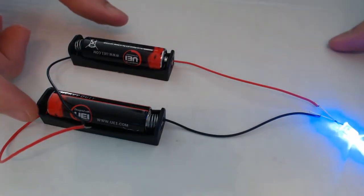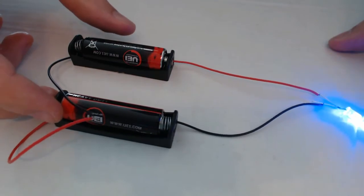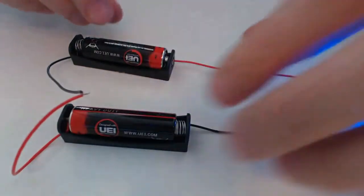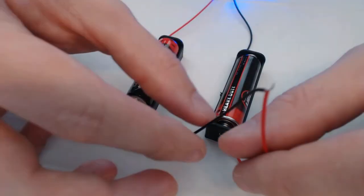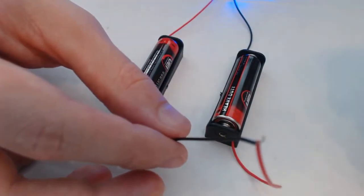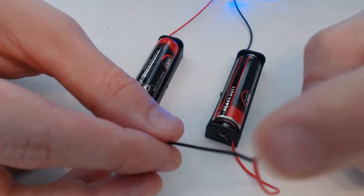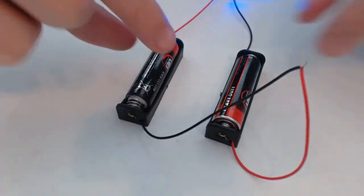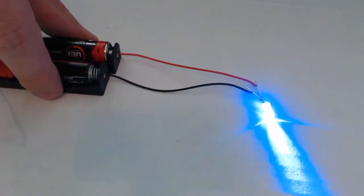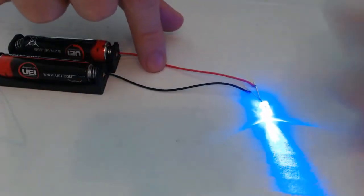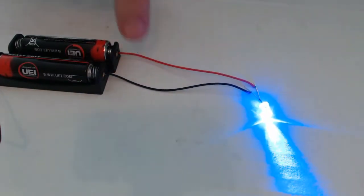So what I've done here is I have two AA batteries and you can see I have the red side of one and the black side of the other. Those wires are connected. Now this other side might be a little difficult to see at the moment because the lights on.